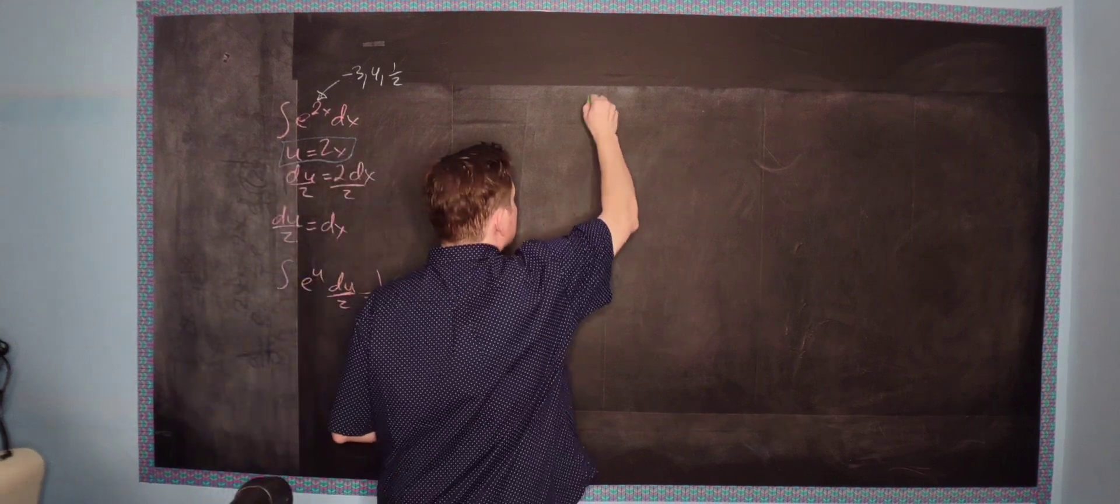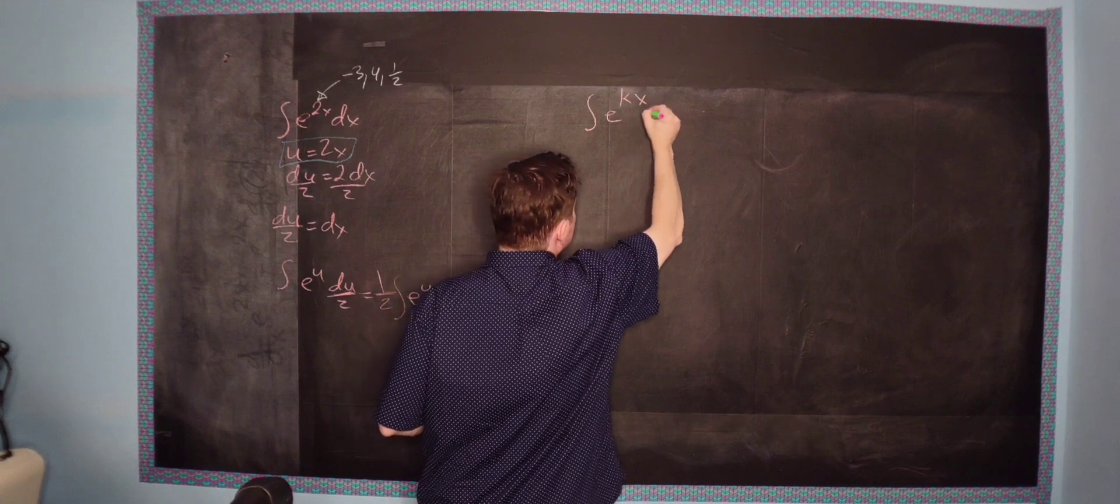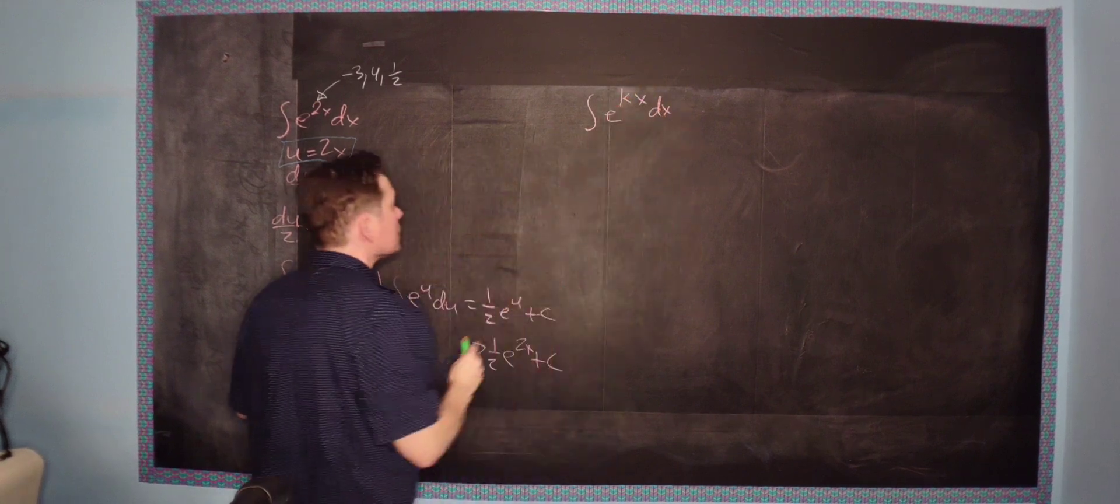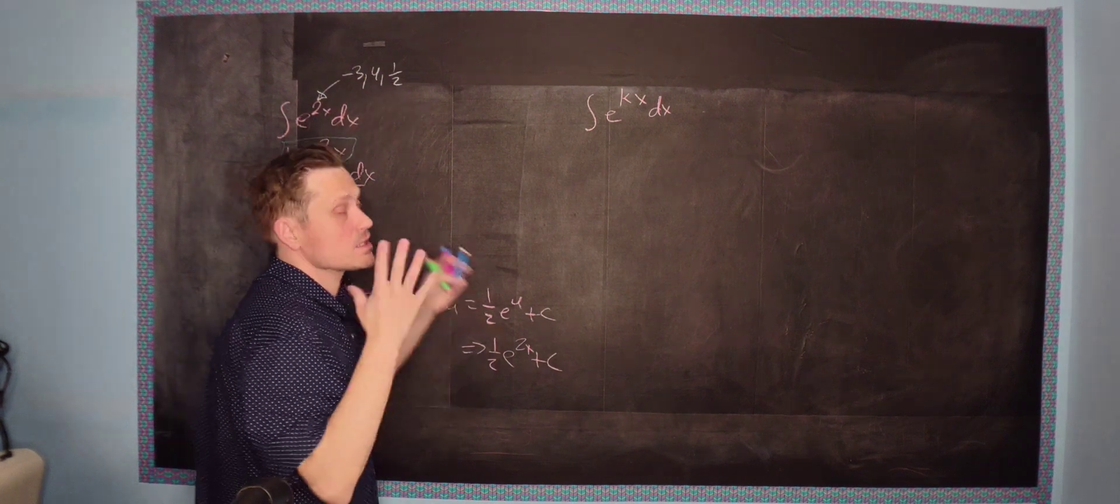So in that case, it would look like the following then. We would have the anti-derivative of e to the kx and then dx. So the k could stand, in this case, it stands for the 2, but it could be negative 3, 4, 1 half. It's just some number.